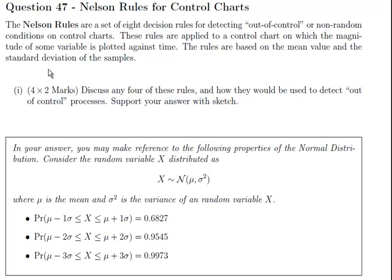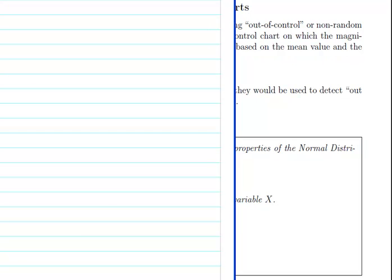So, discuss any four of these rules and how they would be used to detect out of control processes. Support your answer with sketches. Sketches should be plural. Also, just a quick remark that this is four rules.